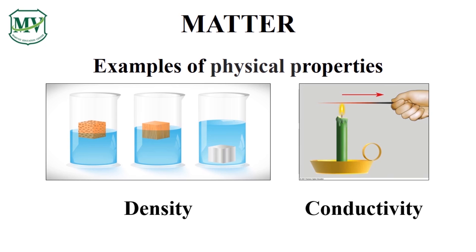Conductivity is a physical property of matter because the identity of the substance does not change. For example, a copper wire is still copper while it is conducting electricity. A copper wire transfers heat from one end to the other, but it still consists of copper at every point.